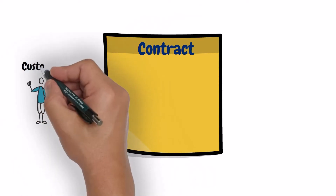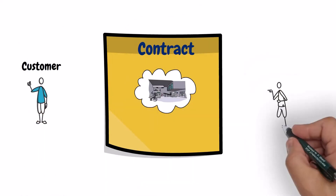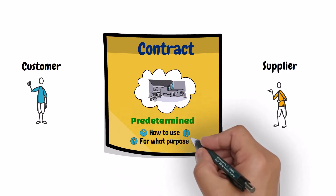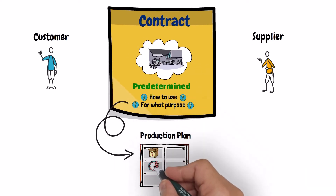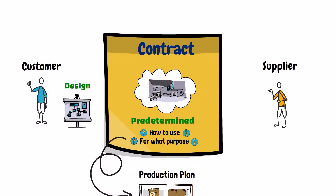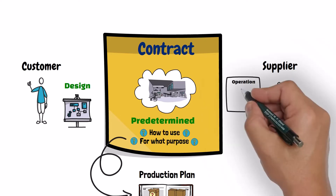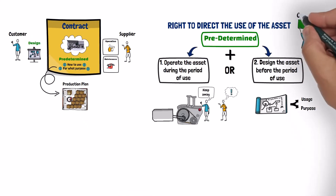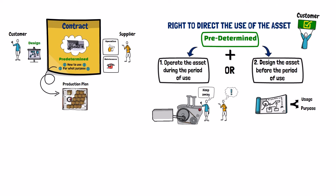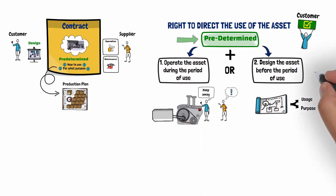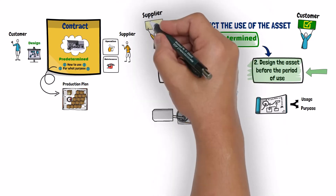Another example: a contract where the customer is granted the right to use a production line in a factory owned by the supplier. The contract specified how and for what purpose the production line will be used, by referring to the production plan that spells out the goods to be produced, when and how much to be produced. The customer was allowed to make some modifications to the design of the production line before the period of use to suit its production needs. The supplier is responsible only for the operation and maintenance of the production line. Here, the customer has the right to direct the use of the production line — decisions are predetermined in the contract, and the customer designed the production line. The fact that the supplier is just operating the production line does not grant the supplier any rights to direct its use.